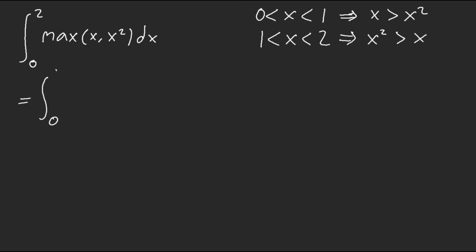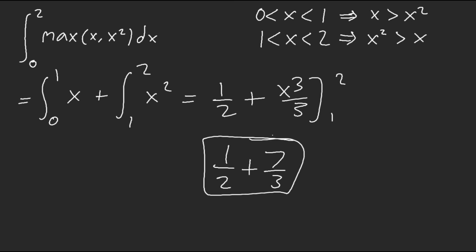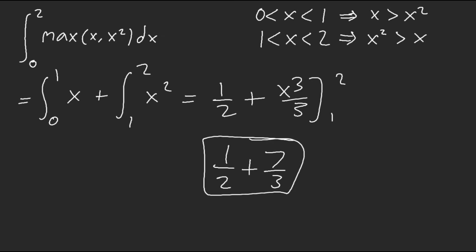We split this up: from 0 to 1 the max is x, and from 1 to 2 the max is x². Our answer is x²/2 evaluated from 0 to 1, which gives 1/2, plus x³/3 evaluated from 1 to 2, which is 8/3 minus 1/3 = 7/3. So the answer is 1/2 + 7/3.